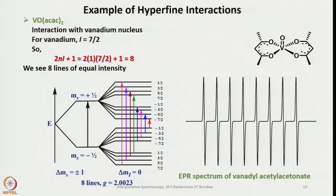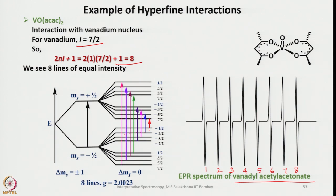Now let us look at one more metal complex — vanadyl acetylacetonate (VO(acac)2). Here i=7/2 for vanadium, so the interaction with the vanadium nucleus gives 8 lines, and a very beautiful spectrum with 8 lines is observed. The corresponding transitions are shown. The G value is 2.0023. This is how one can analyze and interpret EPR spectra — find the equivalent nuclei, determine the hyperfine splitting, relative intensities, and draw the coupling tree.